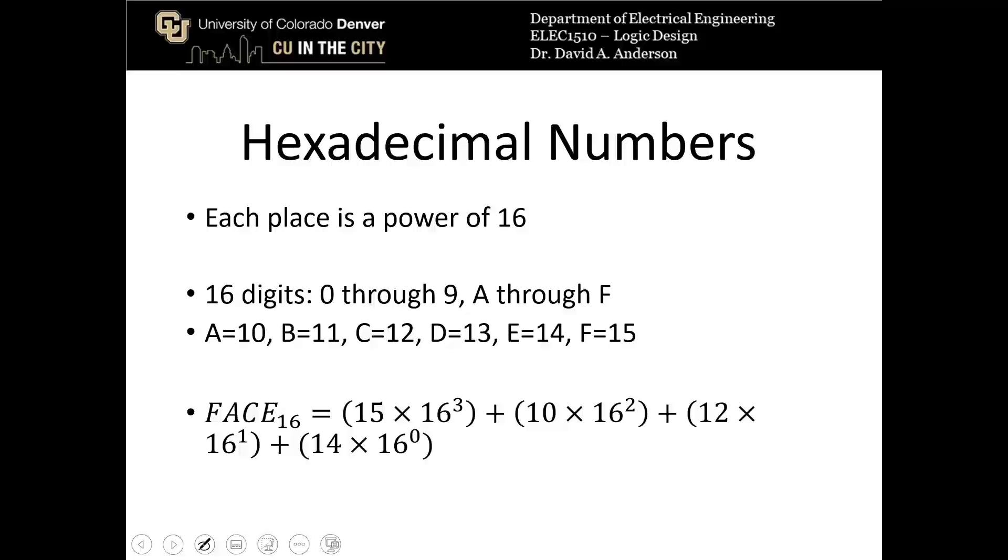So for example, F, A, C, E, which looks like the word face, in hex is actually 15 times 16 cubed, because F here is 15, as I had written right here. So because that F is in the thirds place, we've got 15 times 16 cubed.